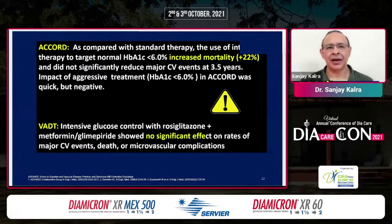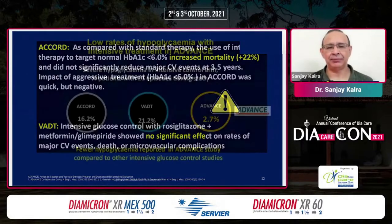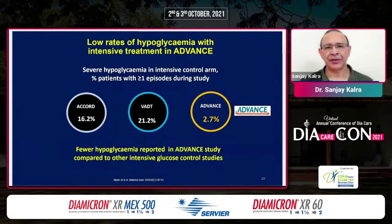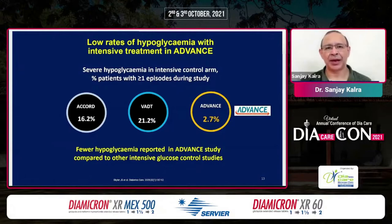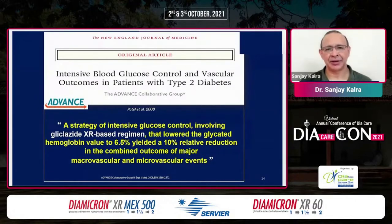Why did ADVANCE show good results while ACCORD and VADT did not? Perhaps the drugs being used were different, or perhaps the approach was different, or both. In ACCORD, there was a lot of use of insulin and HbA1c was brought down very fast in elderly people. In VADT, rosiglitazone was used and there was weight gain. ACCORD and VADT both showed high levels of severe hypoglycemia. ADVANCE did not have hypoglycemia. The take-home message is: you can achieve good HbA1c control, reduce macro and microvascular events, and reduce adverse events — provided you do not cause hypoglycemia. This can be achieved with a gliclazide XR-based regimen, as shown in ADVANCE.